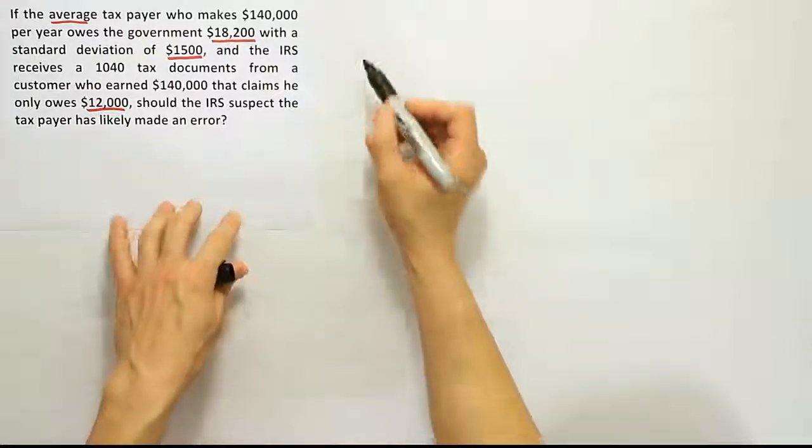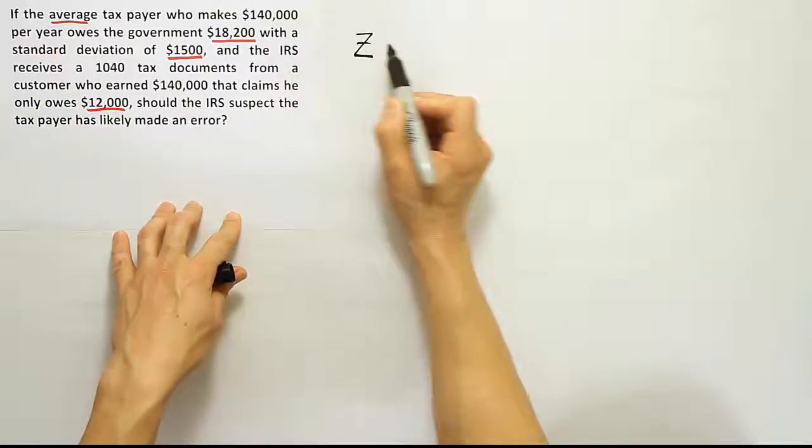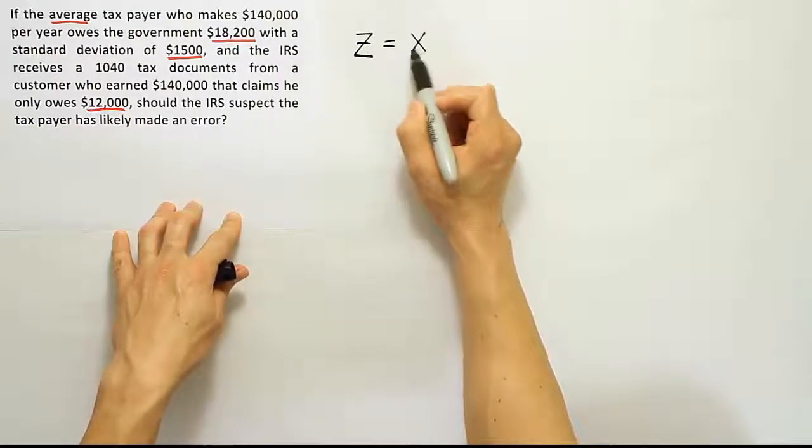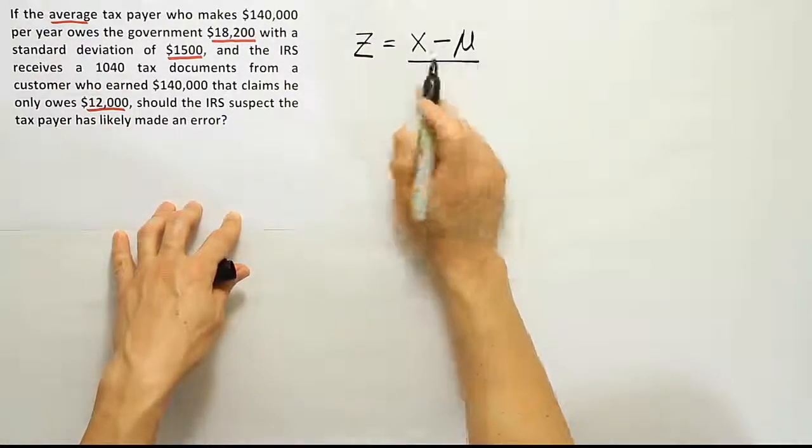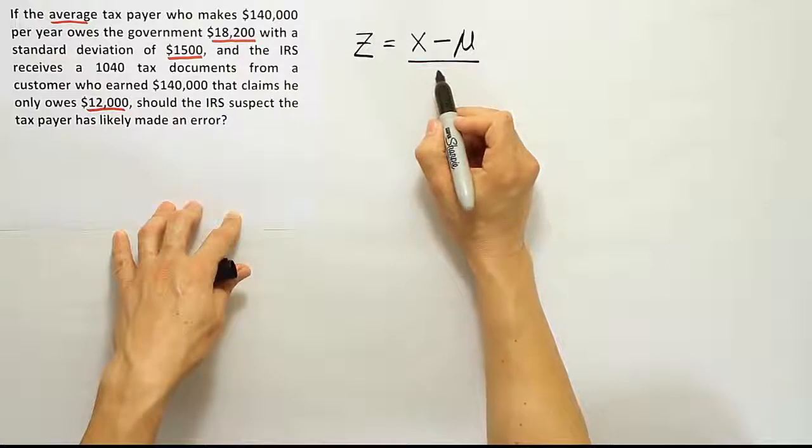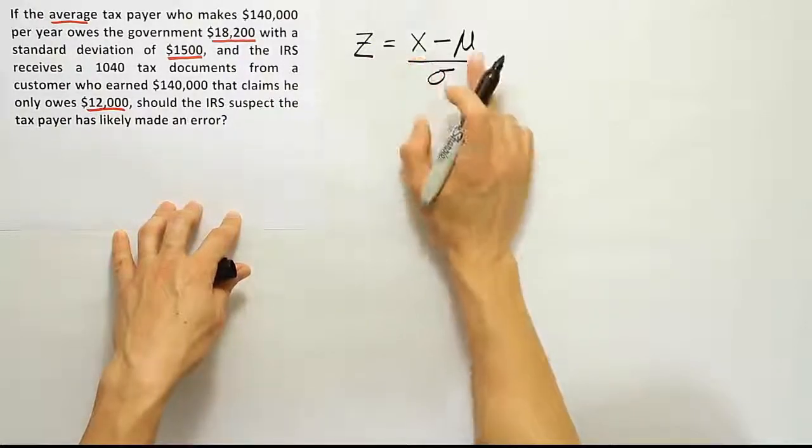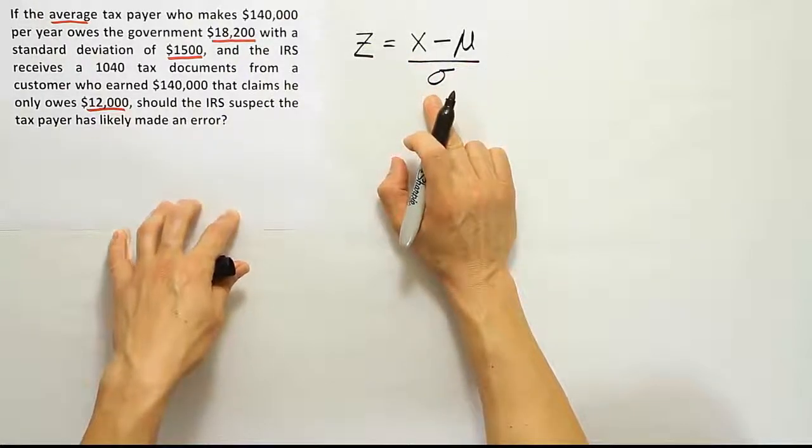Let's actually create a formula for the Z-score. So remember, the Z-score is equal to X, the score you want to convert, minus the mean. That gives you the distance the score is from the mean, divided by the standard deviation, and that just tells you how far away it is in terms of standard deviations.